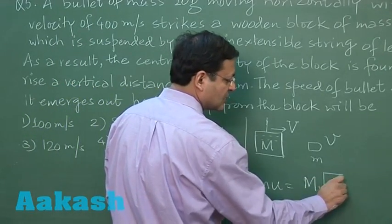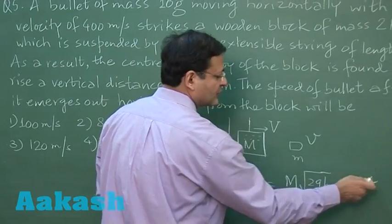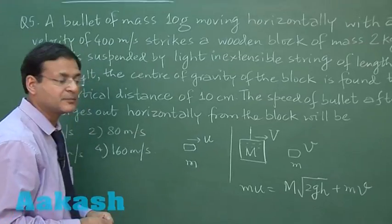So it is √(2gh). Velocity will be √(2gh) plus m times v, the final velocity after penetration.